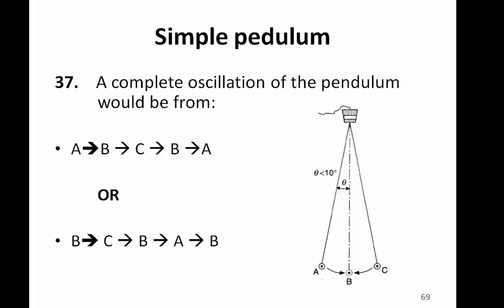Another way of counting one oscillation is from B to C to B again and back to A and finally back to B. And this is counted as one oscillation as well.